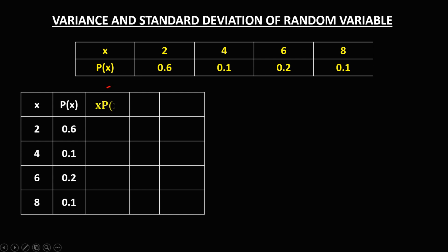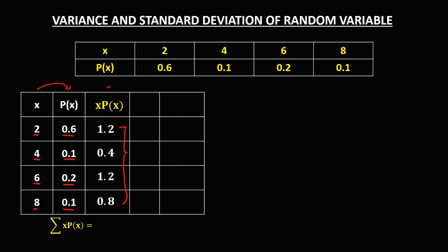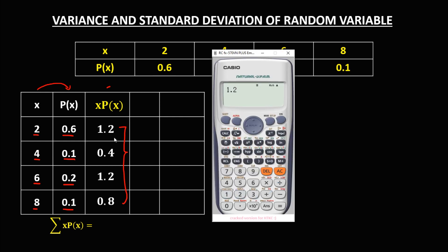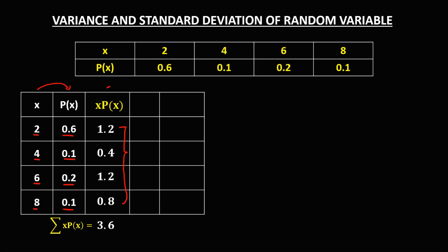For this column, that's x times P(x). We just need to multiply these two columns. So we have 2 times 0.6, that's 1.2; 4 times 0.1, that's 0.4; 6 times 0.2, that's 1.2; and 8 times 0.1, that's 0.8. Then to find the summation of x times P(x), we add all these numbers: 1.2 plus 0.4 plus 1.2 plus 0.8 equals 3.6. So the summation of x times P(x) is 3.6.